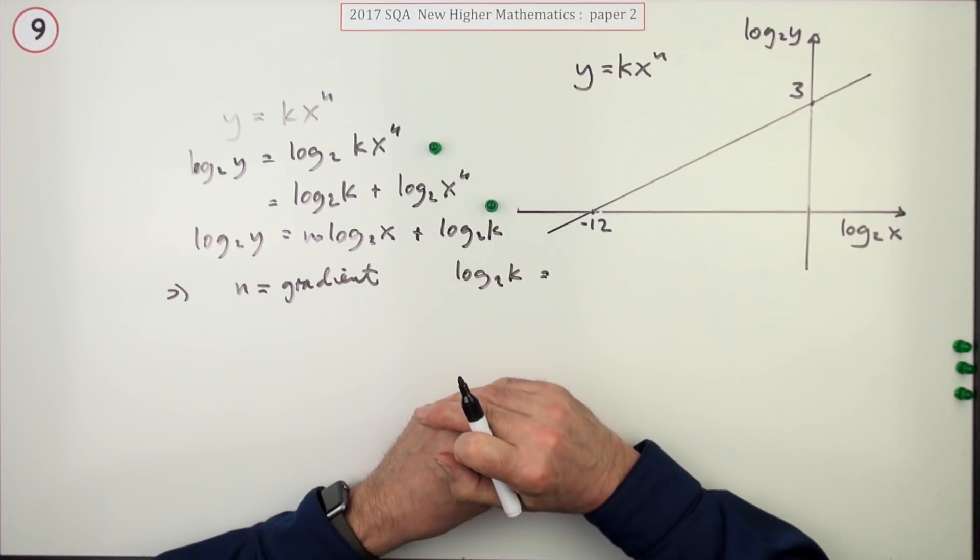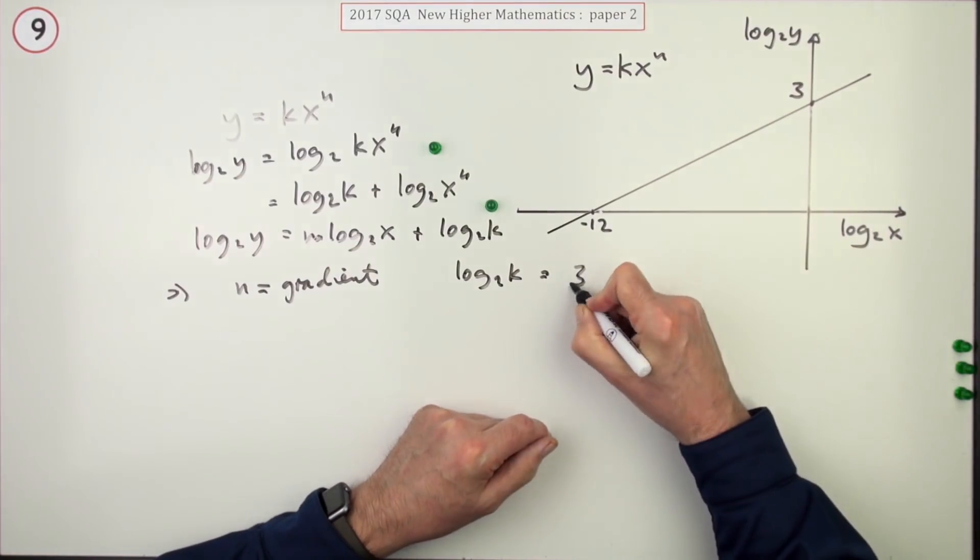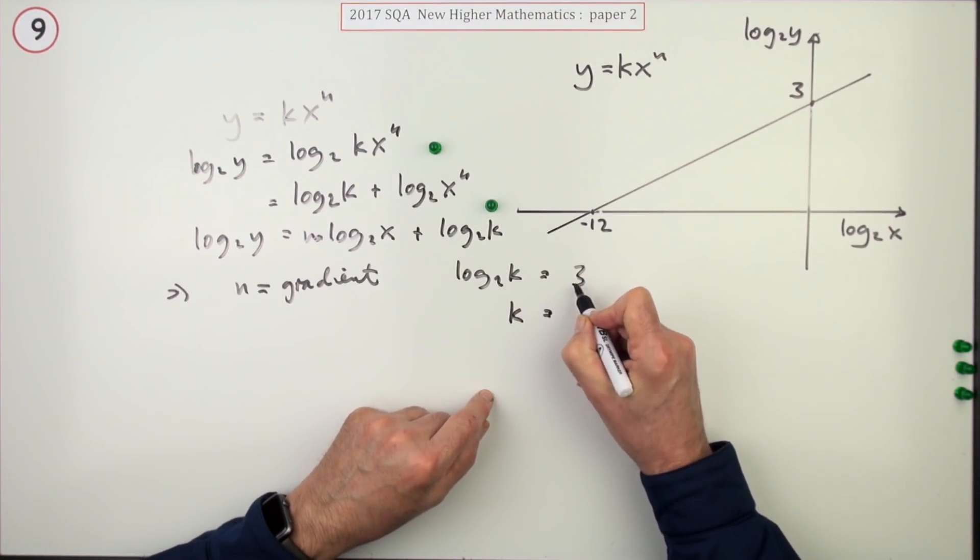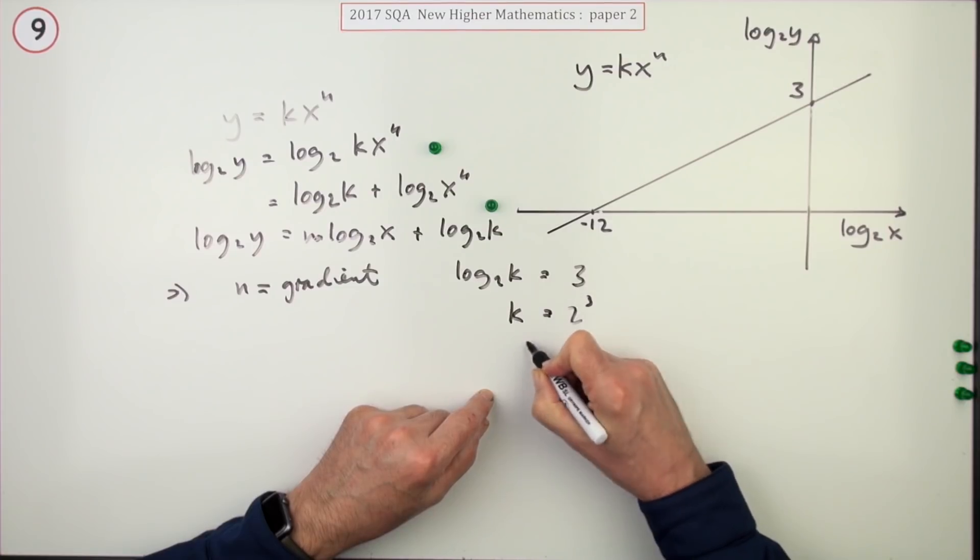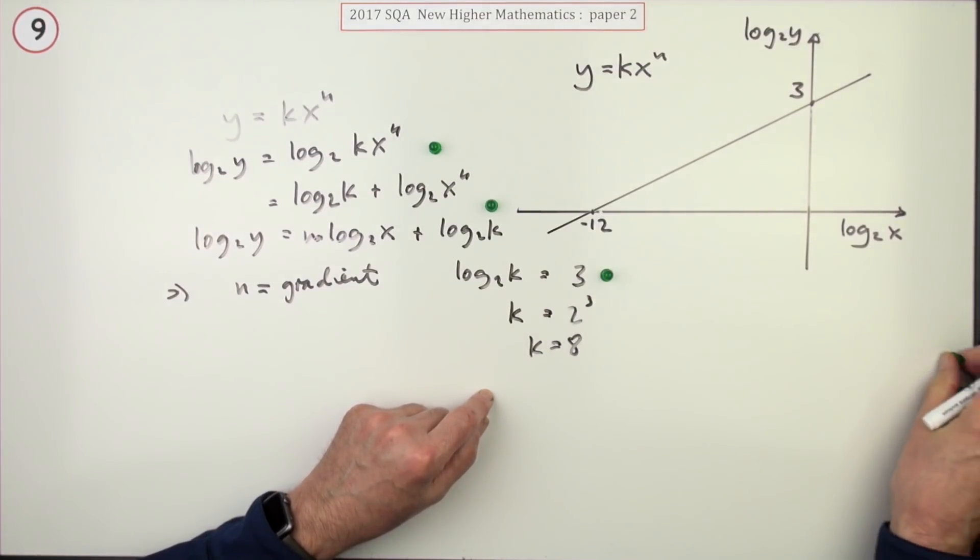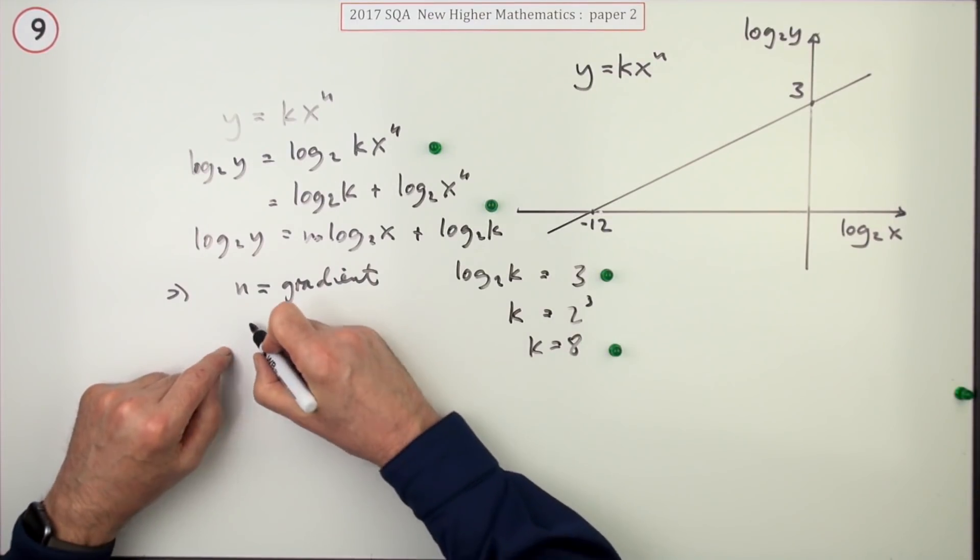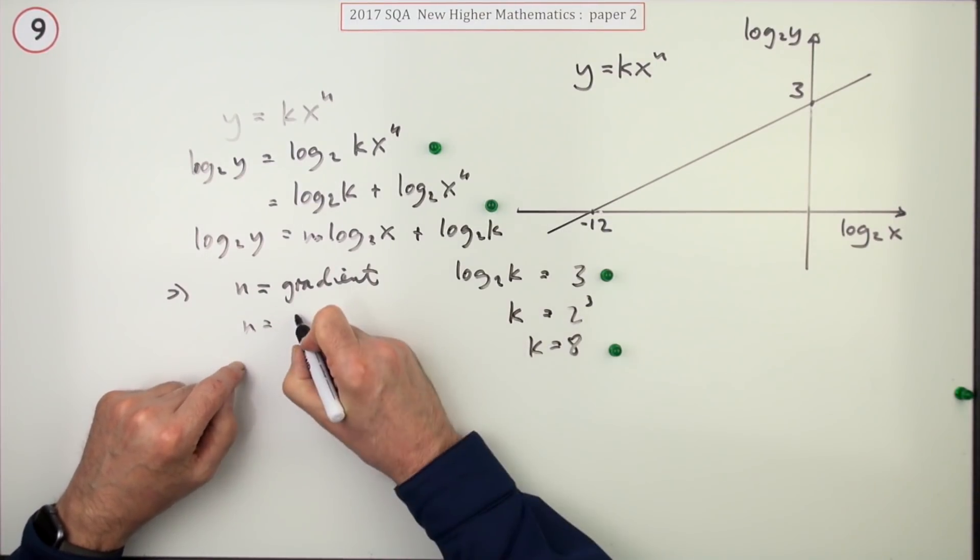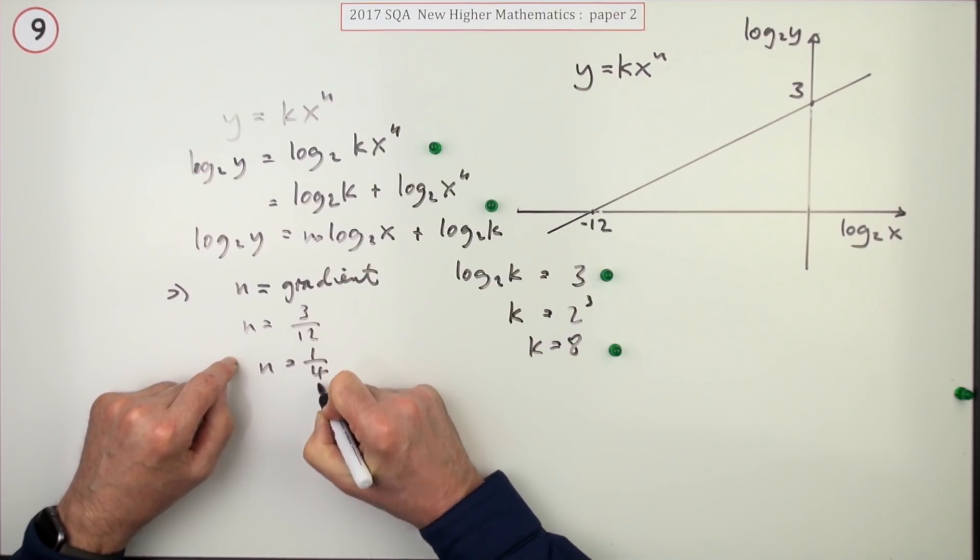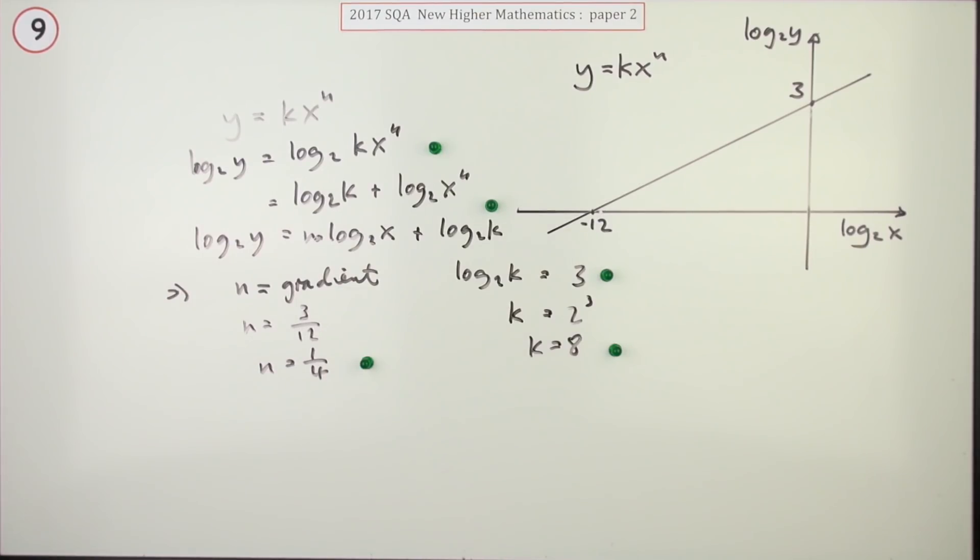You could go straight in with 3 for that. I can rearrange that one: log base 2 of K is 3, so K will be 2 to the power 3, so K is 8. There was a mark for that and a mark for that. And N is the gradient. Well the gradient is 3 upon 12, so N is a quarter, and that was the last mark.